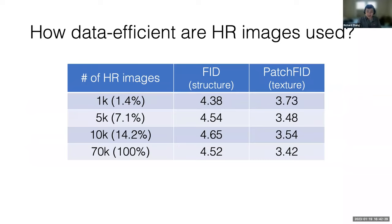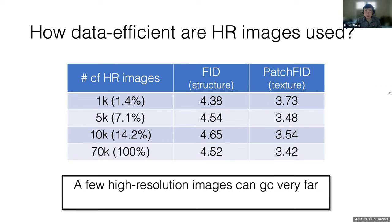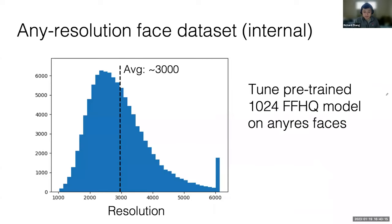We also asked how data efficient are these high resolution images. What we can do is we can vary the number of high res images from 1000 all the way up to the full set. We can see if FID and patch FID go down. What we see is that it's actually hard to see any pattern between all these numbers. They're all about the same. Some of them are higher, some of them are lower. What that's indicating is that actually the learning is pretty efficient. Just a few high resolution images can actually go really far. You don't necessarily need all your images to be high res. If you just have a lot of low res images, but a few high res images sprinkled in, you can actually end up getting very good high res images at the end.